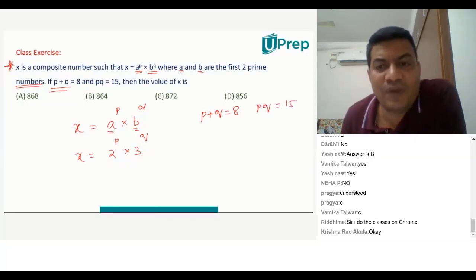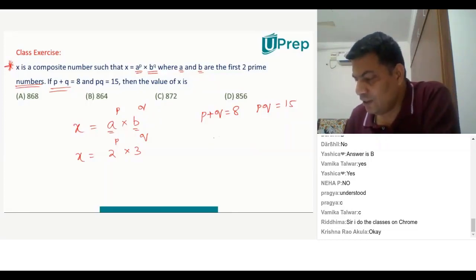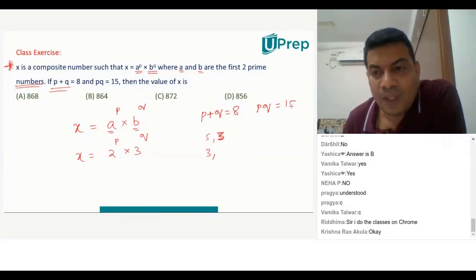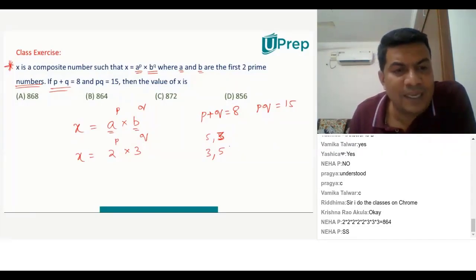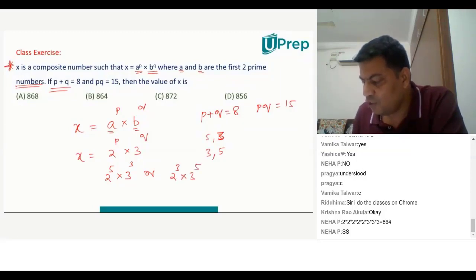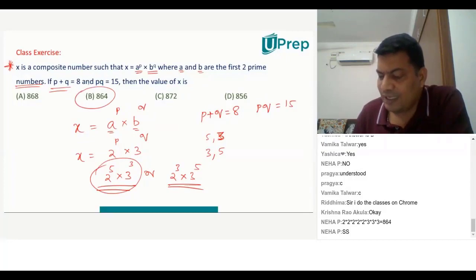This requires observation. A student suggests P is 5 and Q is 3. Very good — it could be like that. P could be 5 and Q could be 3, or it could be the other way around. Could it be 4 plus 4? No — 4 plus 4 is 8 but 4 into 4 is 16, not 15. So it could be 5 and 3, or 3 and 5. Therefore, the answer could be 2 to the power 5 into 3 to the power 3, or 2 to the power 3 into 3 to the power 5. If you calculate, this answer is equal to 864. That is your right answer.